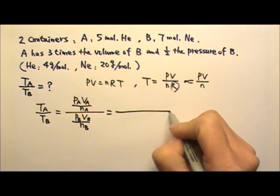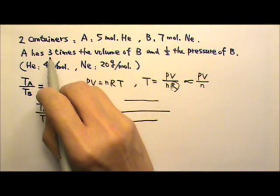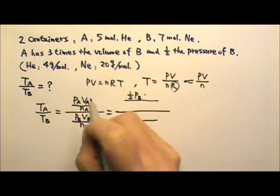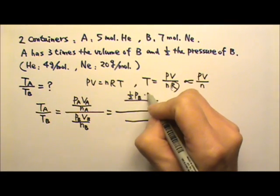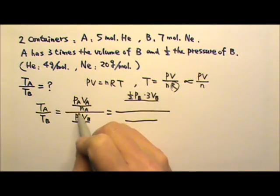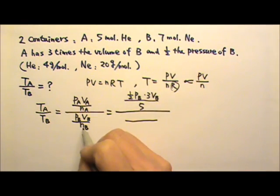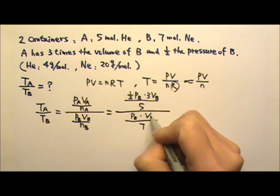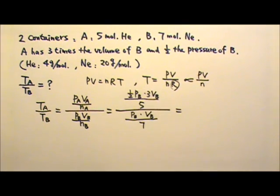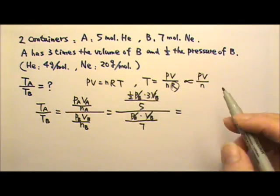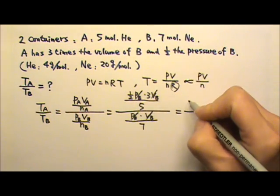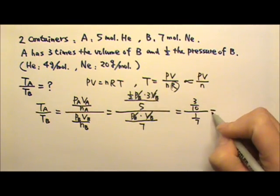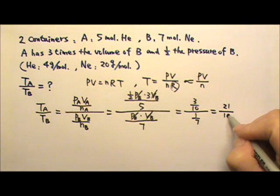The pressure of A is half the pressure of B, so P_A = (1/2)P_B. The volume of A is 3 times the volume of B, so V_A = 3V_B. The number of moles for A is 5, and for B is 7. Substituting, P_B and V_B cancel, leaving 3/10 in the numerator and 1/7 in the denominator, which gives 21 divided by 10.